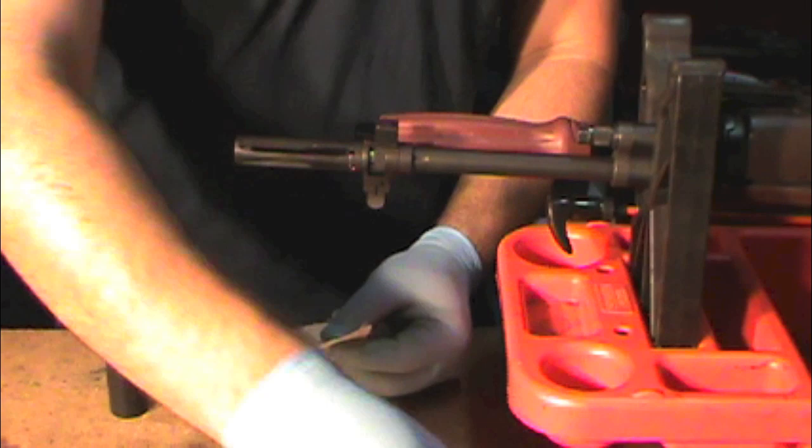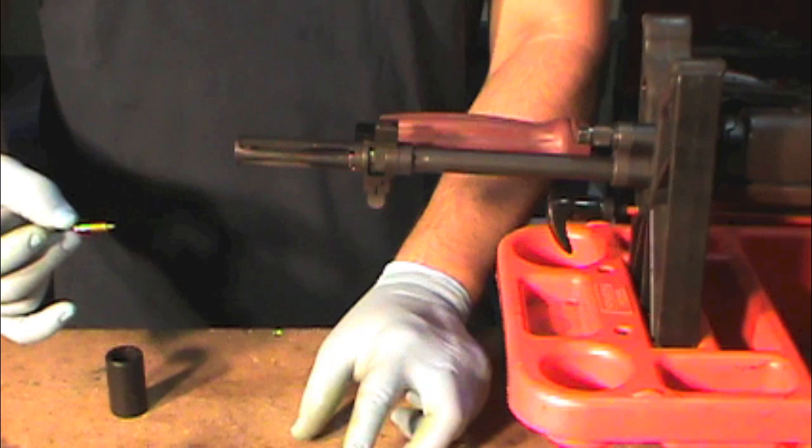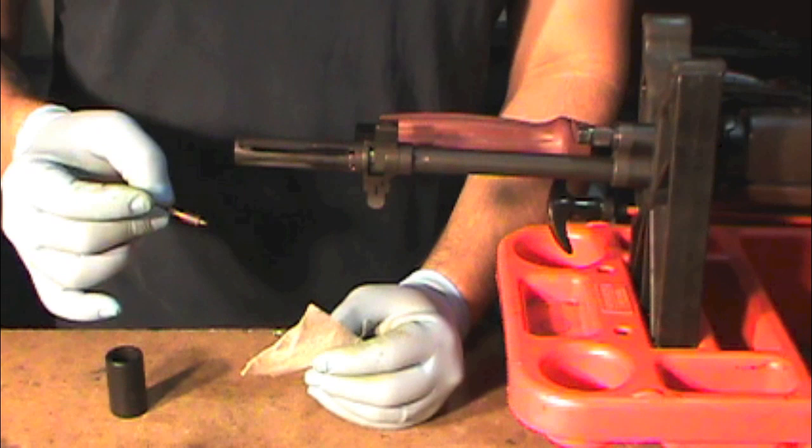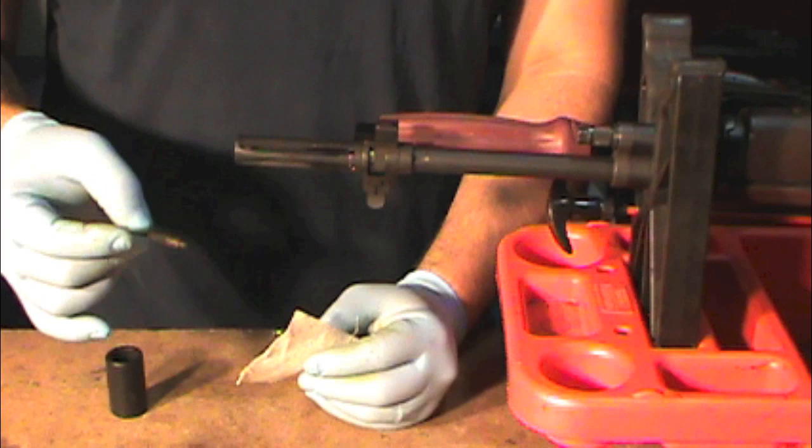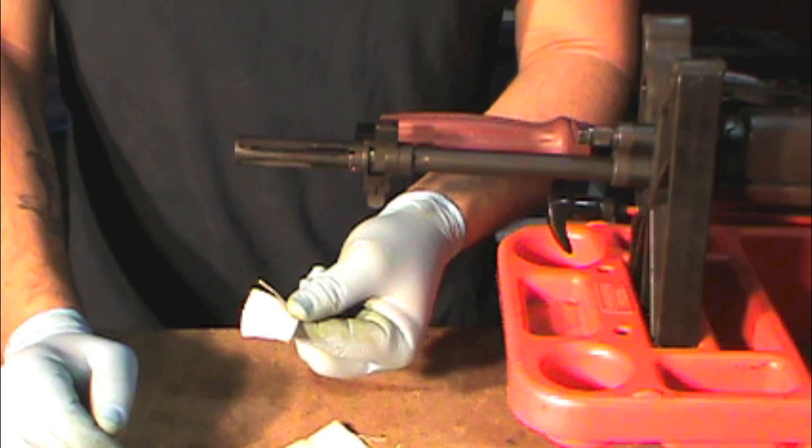Now what I like to do, I like to use a patch and a jag, a brass jag. Now because the jag is basically caliber specific, it fits so tight in the barrel, if you use a .30 caliber patch with a jag, it's going to be so tight, you're going to get stuck in there, and you're going to bend your rod or something, and it's going to take a lot of effort to get it back out. So what I do is I actually, what I found out works perfectly, are these .22 caliber GI cleaning patches or cotton cleaning patches that are made to be used with an eyelet and a .223 bore.